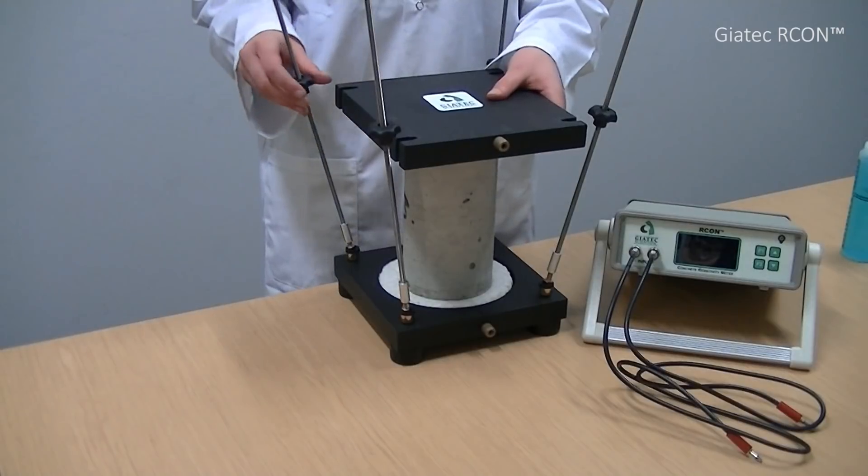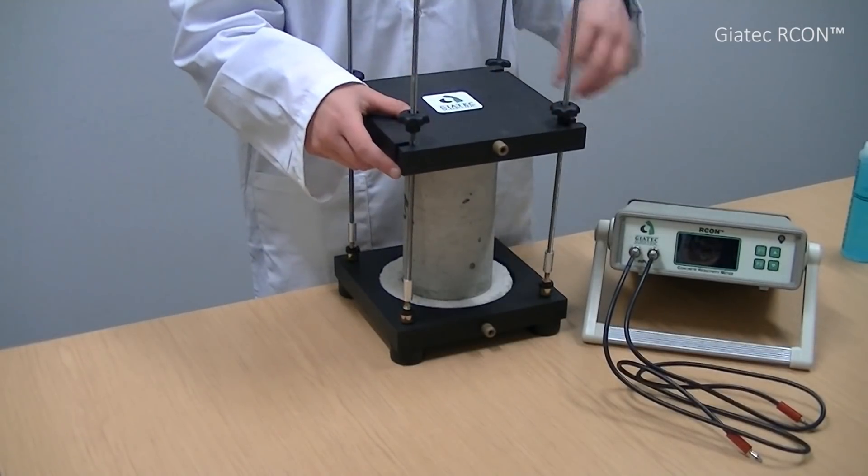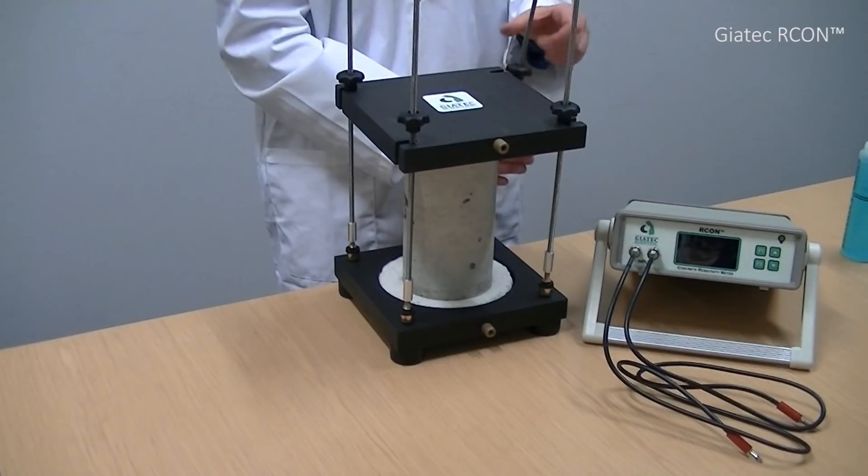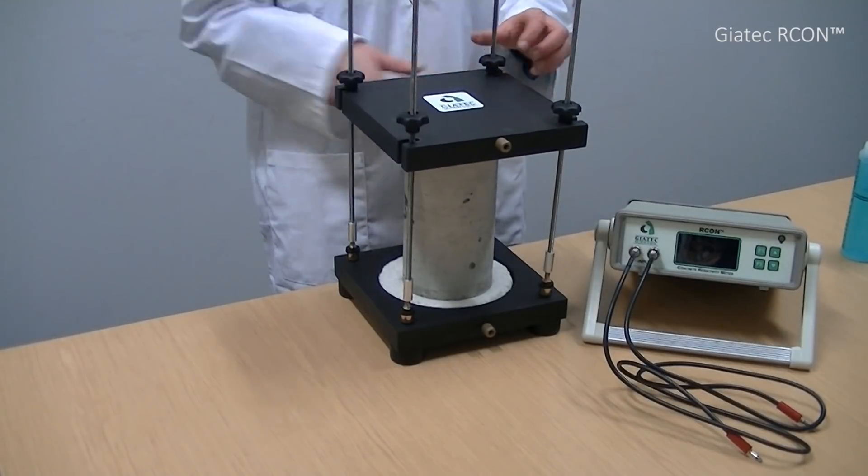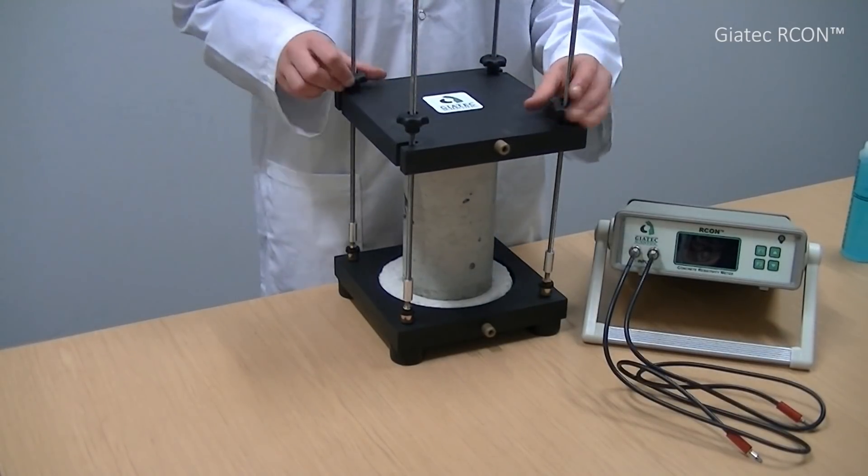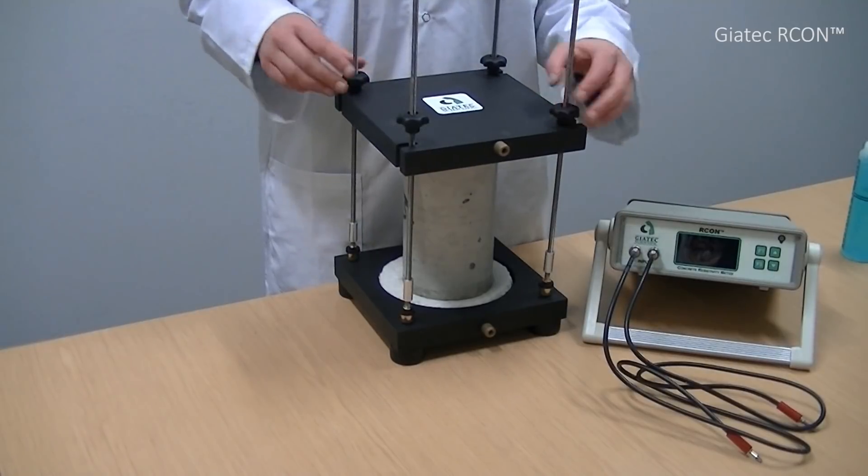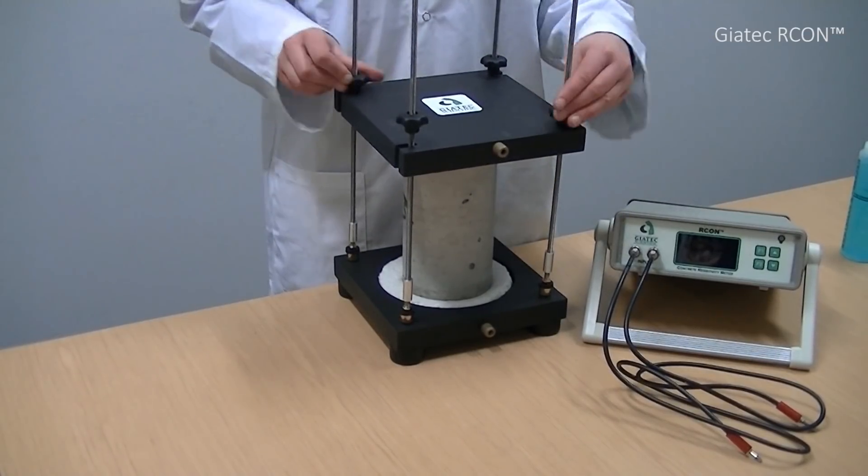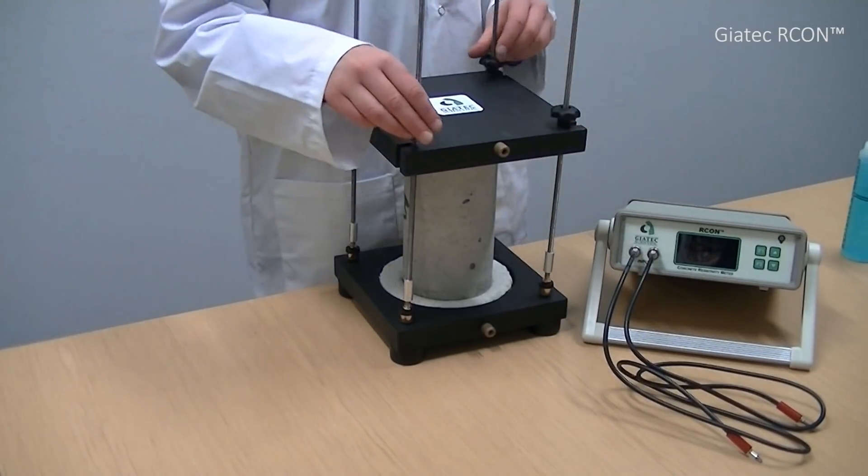Then, I place the rods in a vertical position. I should tighten the knobs of the sample holder until the sponges are pressed tightly against the bottom and top faces of the sample.